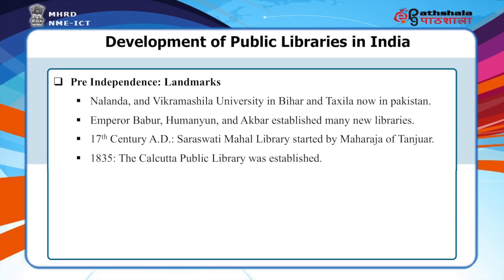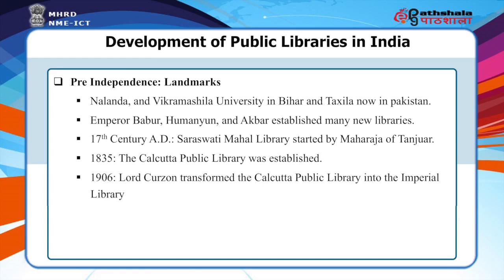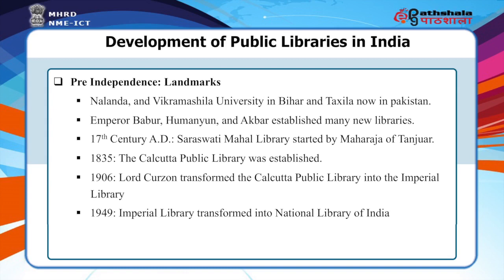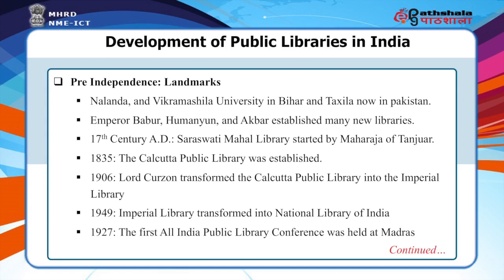The pure public library in the real sense can be traced back to the establishment of the Calcutta Public Library, established in 1835. Lord Curzon transformed the Calcutta Public Library into the Imperial Library in 1906, which was later developed into the National Library of India in 1949. The first All India Public Library Conference was held at Madras in the year 1927.